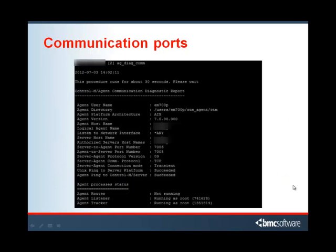Here's an example of running the AG-DIAG-COM. In the output for this, there's quite a bit of information. It has the version, what platform it's running on, the agent host name, the server host name, server-to-agent port, the agent-to-server port, the protocol version, whether it's connection mode, and most importantly, Unix ping-to-server platform succeeded and agent ping succeeded.